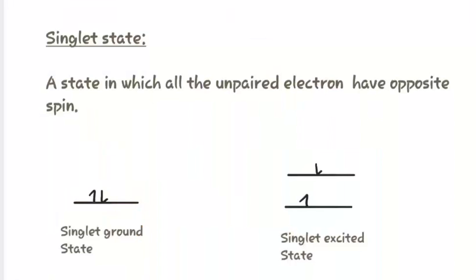Before we study about the mechanism of fluorescence and phosphorescence, let us see what is the singlet state. A singlet state is one in which all the unpaired electrons have opposite spin. Here, both the unpaired electrons in the ground state have opposite spin, and thus it is known as the singlet ground state.